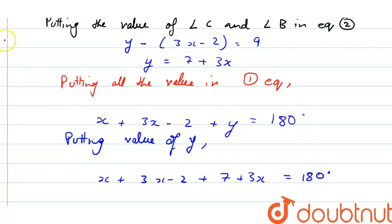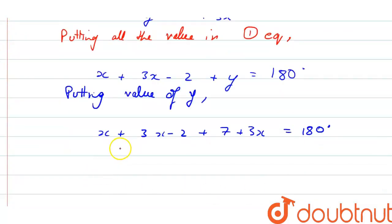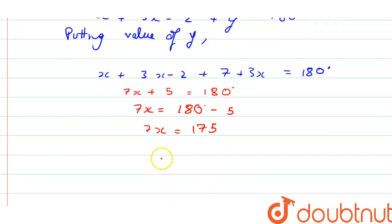Then if we simplify it further, we will get 7x plus 5 equal to 180 degrees. Then 7x equal to 180 degrees minus 5. That is 7x equal to 175. Then we have x equals to 175 by 7, that is 25.